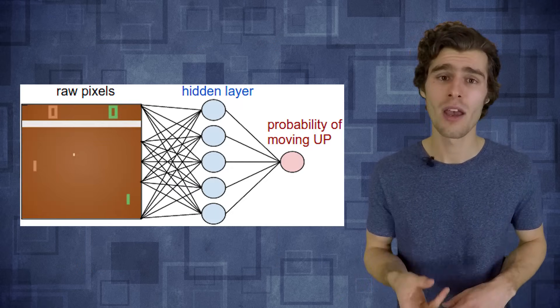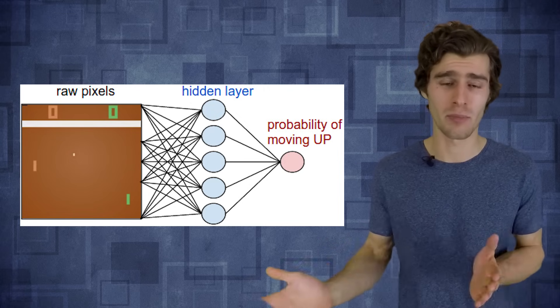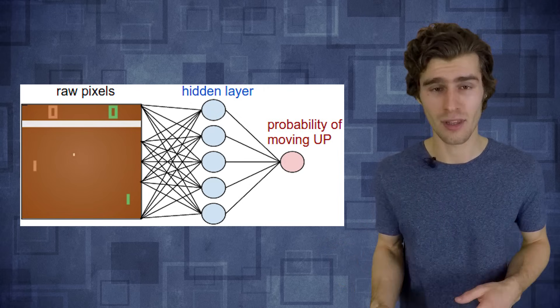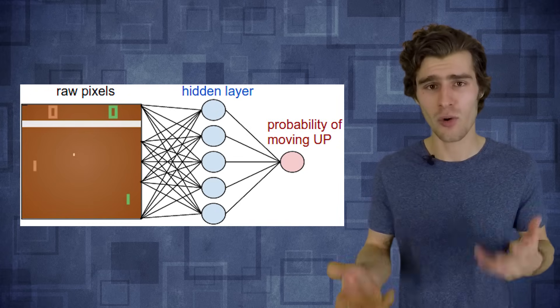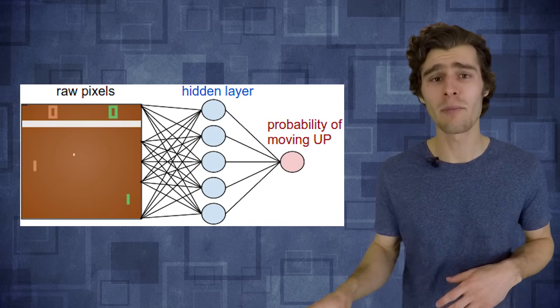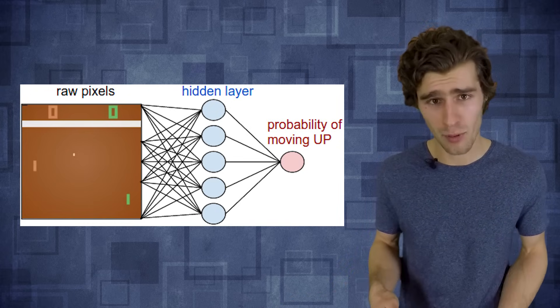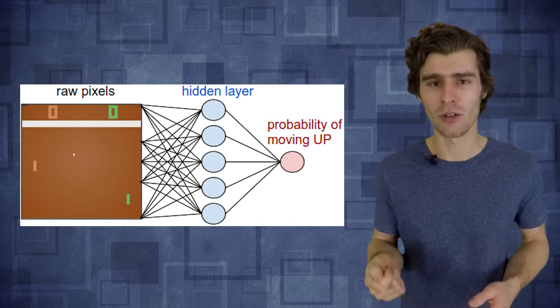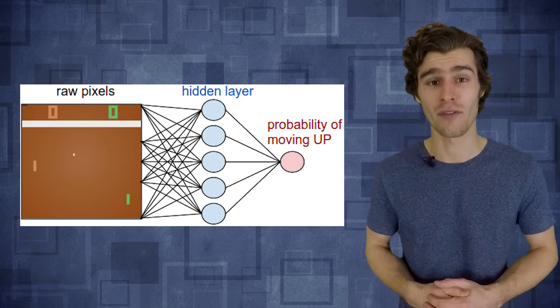And we can then feed those input frames through a very simple neural network that at the output can produce two simple actions. It's either going to select the up action or the down action. And by simply training on the dataset of that human gameplay using something like backpropagation, we can actually train that neural network to replicate the actions of the human gamer.